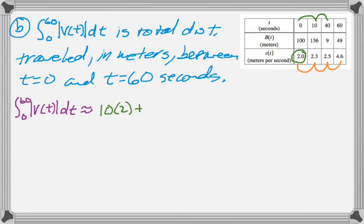Plus the next one is from 10 to 40, so that's 30. And then the left endpoint is 2.3. And then from 40 to 60, which is 20, and then the left endpoint is 2.5. And then put meters after it. So you don't have to evaluate that, so that would be my answer. Actually on this problem I didn't bother to figure that out.